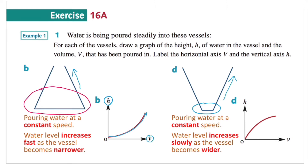Whereas in question D, this is the exact opposite. The curve is going to increase much faster first and then slow down because the vessel is getting wider. So when pouring water at a constant speed into vessel D, the water level increases slowly as the vessel becomes wider. For this type of question, you need to observe the shape of the vessel carefully first.